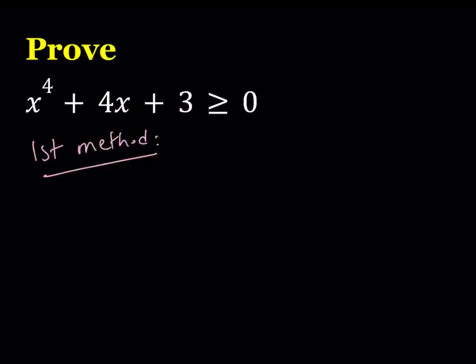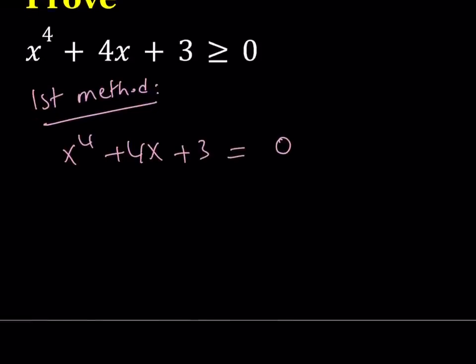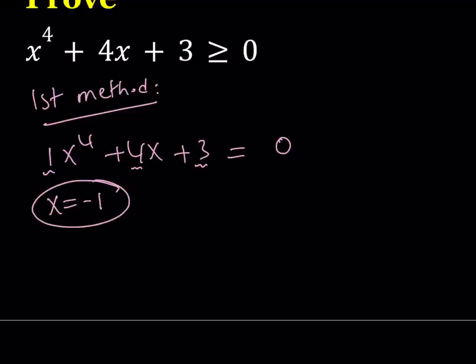I'm going to take this expression and break it down. Before I do, I want you to notice that if I set this equation equal to zero, x equals negative one is a solution. When the sum of the coefficients of even powers equals the sum of coefficients of odd powers, x equals negative one is a solution. Here the coefficient of x to the fourth is one, the constant is three — their sum equals the coefficient of x, which is four. So x equals negative one is a solution, and that is going to help us solve this problem.